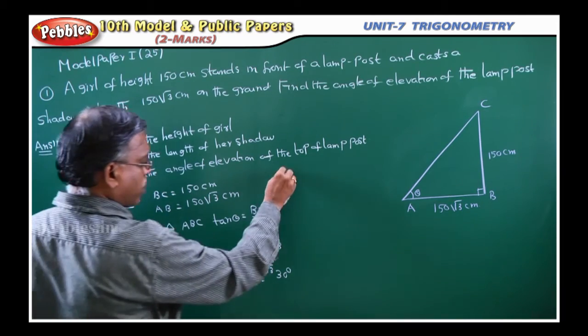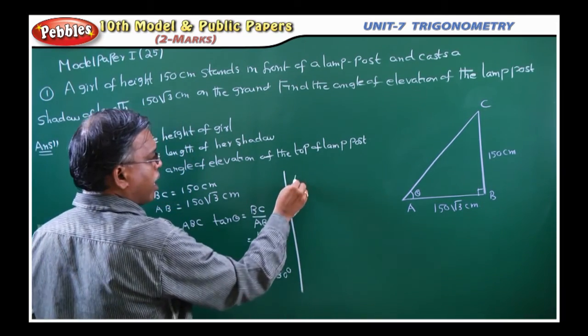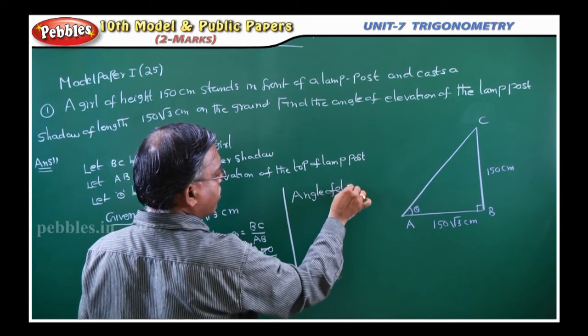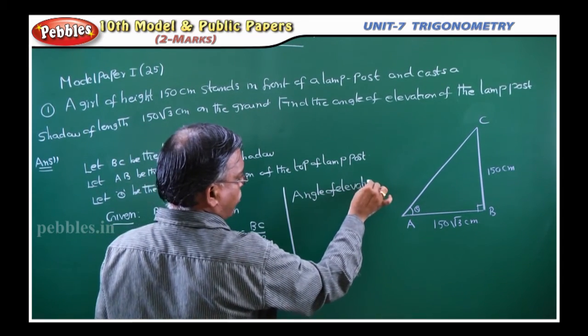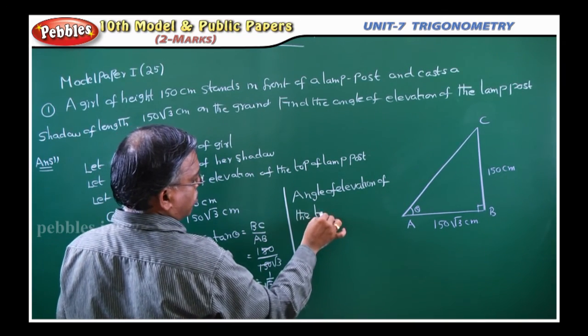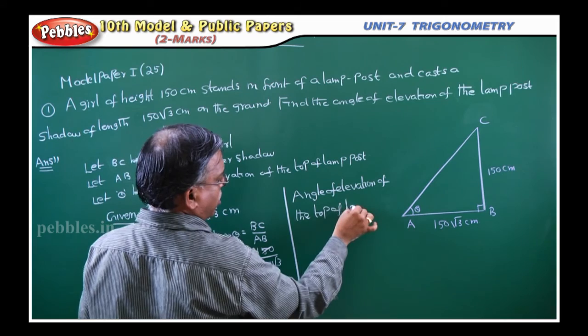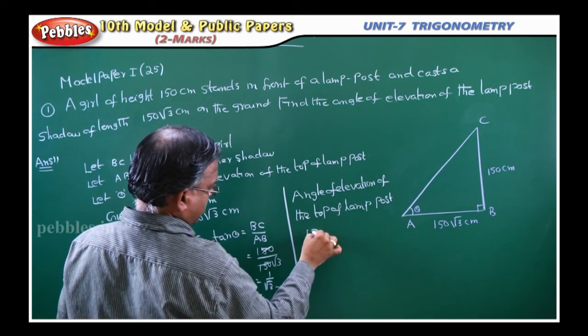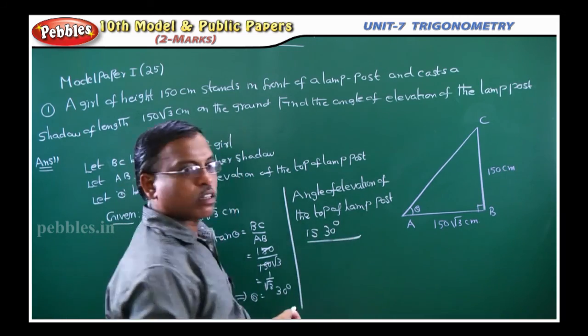Therefore, you can write the conclusion also. Angle of elevation of the top of the lamp post is 30 degrees. That is your answer.